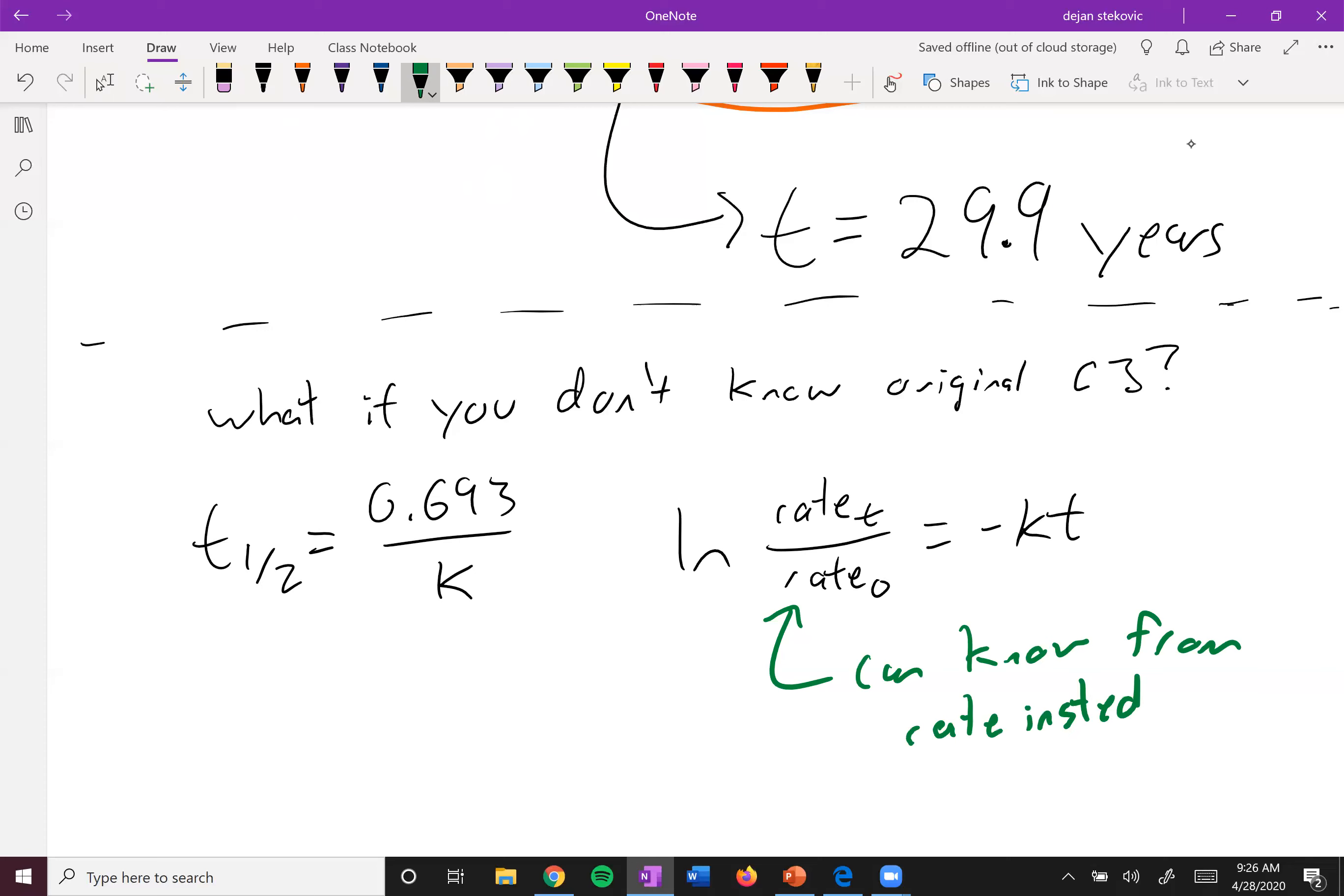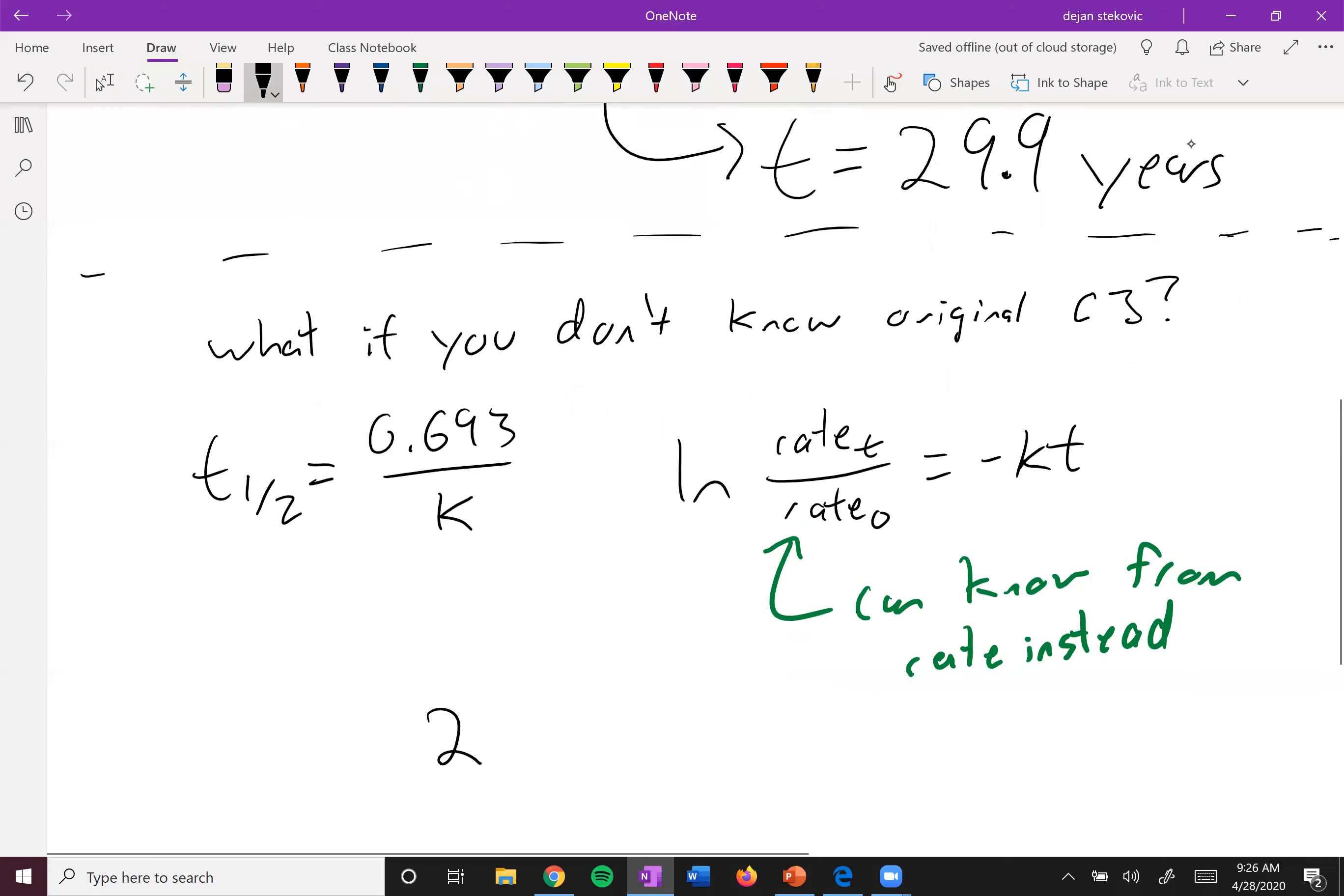For example, in real life, they wouldn't say there's 2% left, they'd say the rate has slowed down to this. Check out problem 21.6 on your own and make sure you understand it.